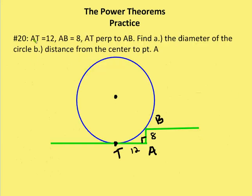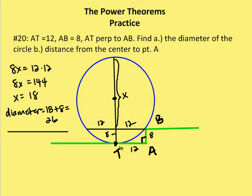Last problem, number 20. AT equals 12 — a tangent line to the circle at point T. AB is perpendicular to AT and AB equals 8. We want to find the diameter of the circle and the distance from the center to point A. I draw a chord of length 12 and also a diameter through the chord that intersects at T.